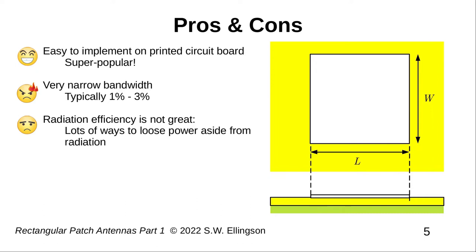A not-so-great thing about patch antennas of this type is that they have tiny bandwidth, typically just 1-3%. That's pretty bad compared even to simple wire dipoles, which typically yield between 3-10%.